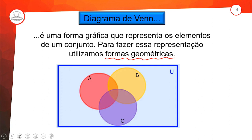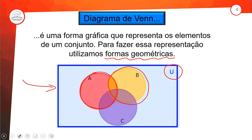A forma mais usual: a gente pode usar formas geométricas quadradas ou retangulares. Aqui o nosso conjunto universo está sendo representado por um retângulo. Mas a parte dos conjuntos em si — conjunto A, conjunto B, conjunto C — está sendo representada por círculos, e é essa forma geométrica mais usual que a gente vai fazer junto com vocês.